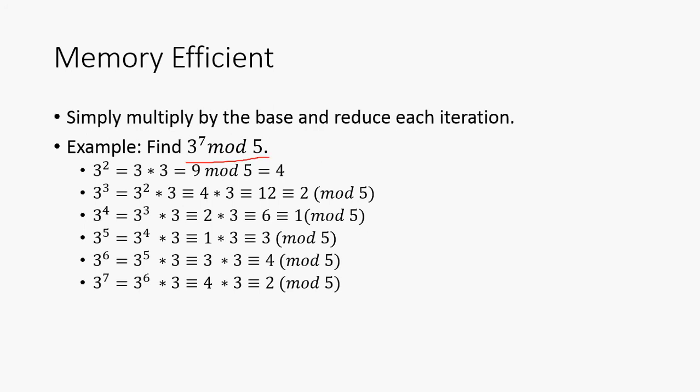So here's this little example. Let's find 3 to the 7th mod 5. Well, 3 mod 5 is going to be 3, right? So we don't need to calculate that. 3 squared mod 5 is going to be 3 times 3, or 9 mod 5, which is 4. 3 cubed is going to be 3 squared times 3, but keep in mind that 3 squared is actually 4 from this relationship right here. So we can do a little substitution and get 3 cubed is going to be 4 times 3, which is going to be equivalent to 12, which is 2 mod 5.